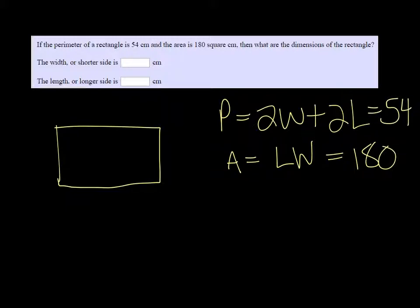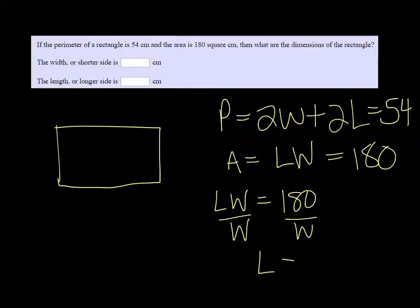So with that, we have enough information that we can find the length and the width. However, we're going to have to do a little bit of algebra to get there. So if we take the Lw equal to 180 and we solve for L, it doesn't matter which way you go, but we divide both sides by W. We get that L is 180 over W.